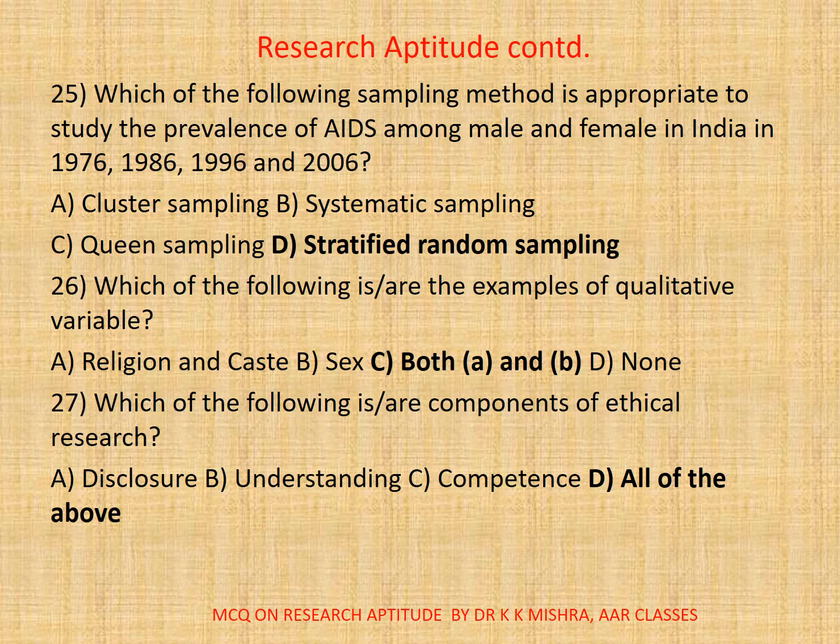Question twenty-six: Which of the following are examples of qualitative variables? A: Religion and caste. B: Sex. C: Both A and B. D: None. The correct option is C: Both A and B.